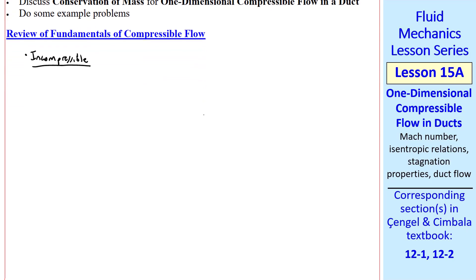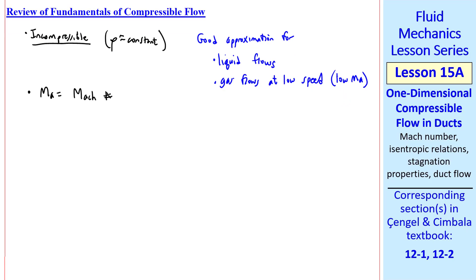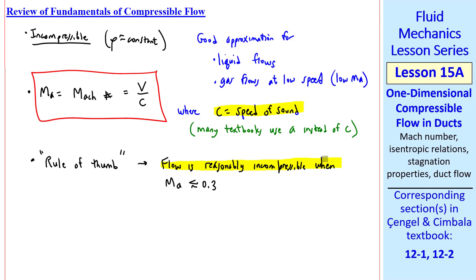As a quick review, pretty much everything we've done so far has been incompressible, where density is approximately constant. This is a good approximation for liquid flows and for gas flows at low speed, or better, low Mach number. Now we'll consider gas flows at higher Mach number where compressibility is important. We'll let Ma be the Mach number, which is the speed V over c, where c is the speed of sound. A typical rule of thumb is that the flow is reasonably incompressible when the Mach number is less than about 0.3. If you do the math, this comes out to about a 5% change in density.